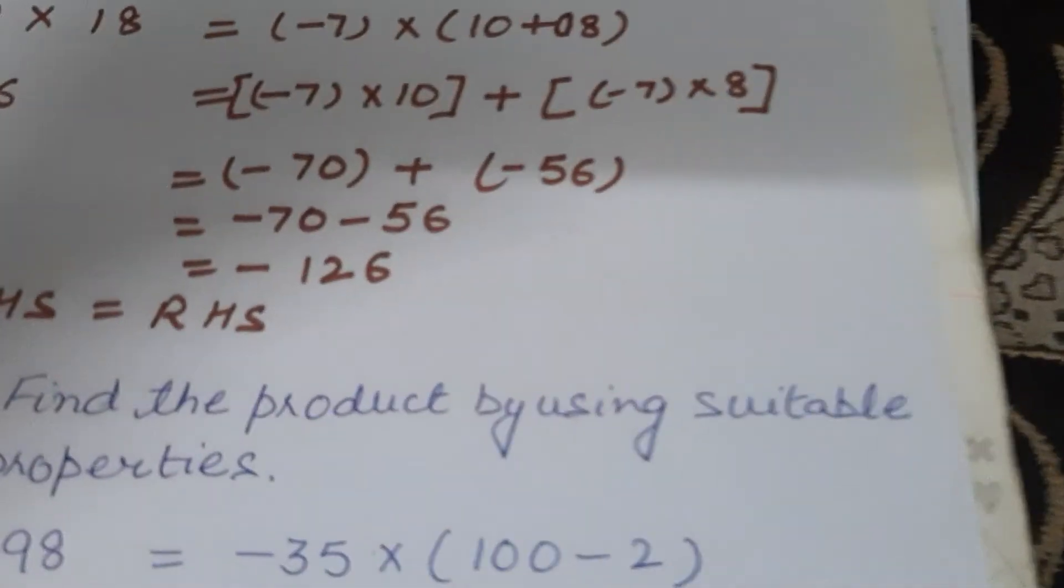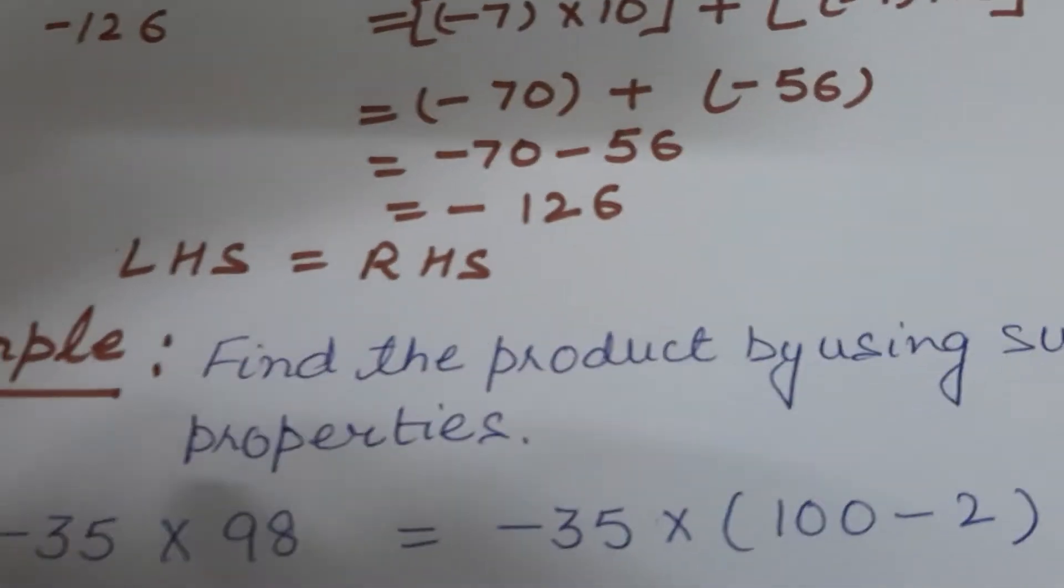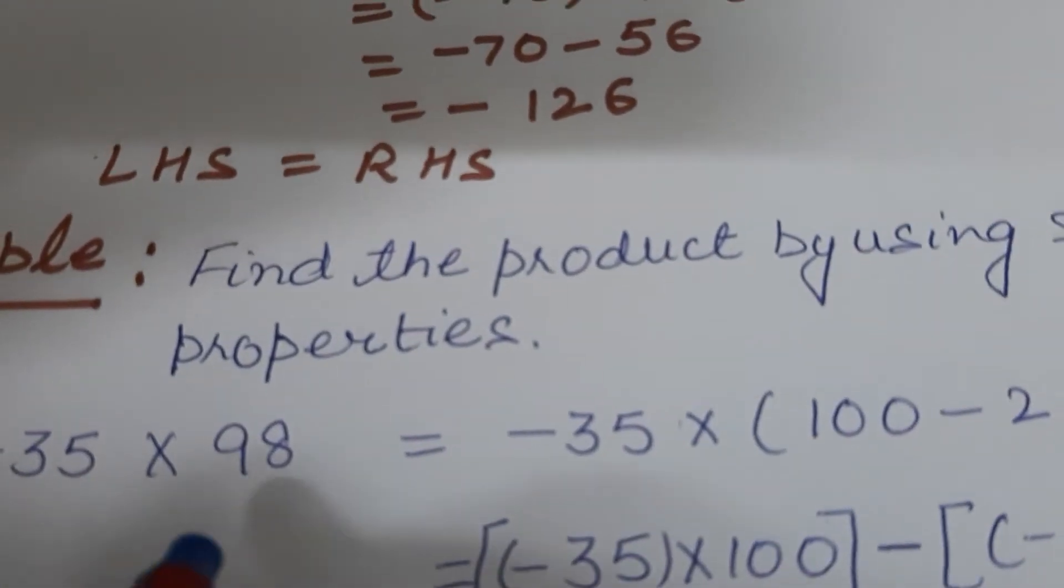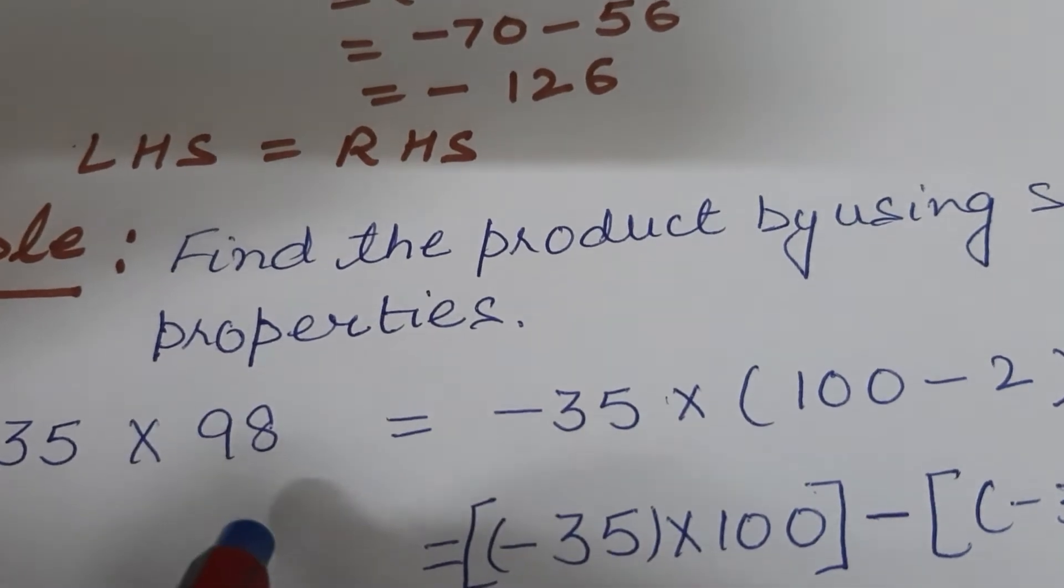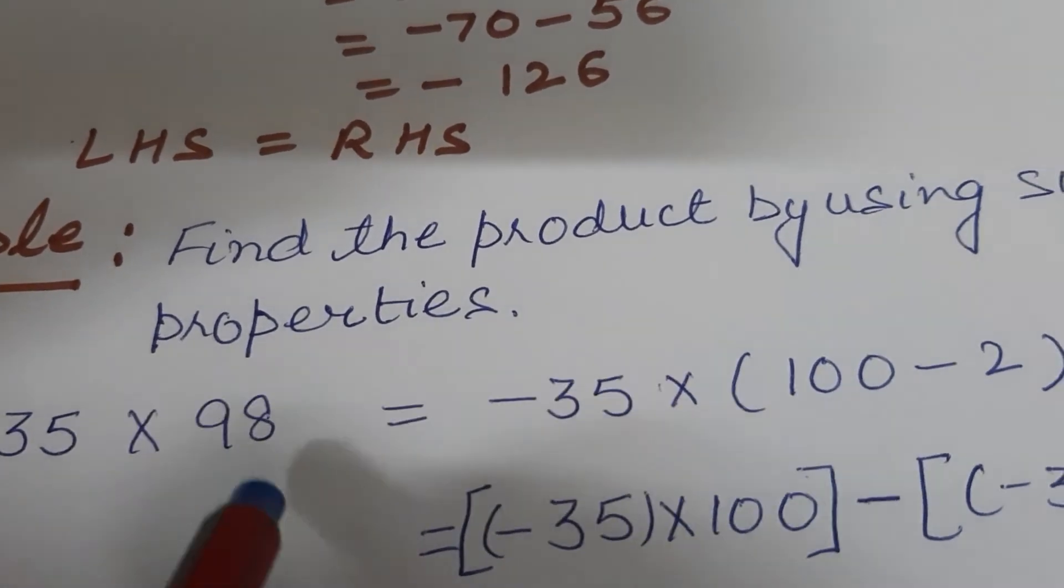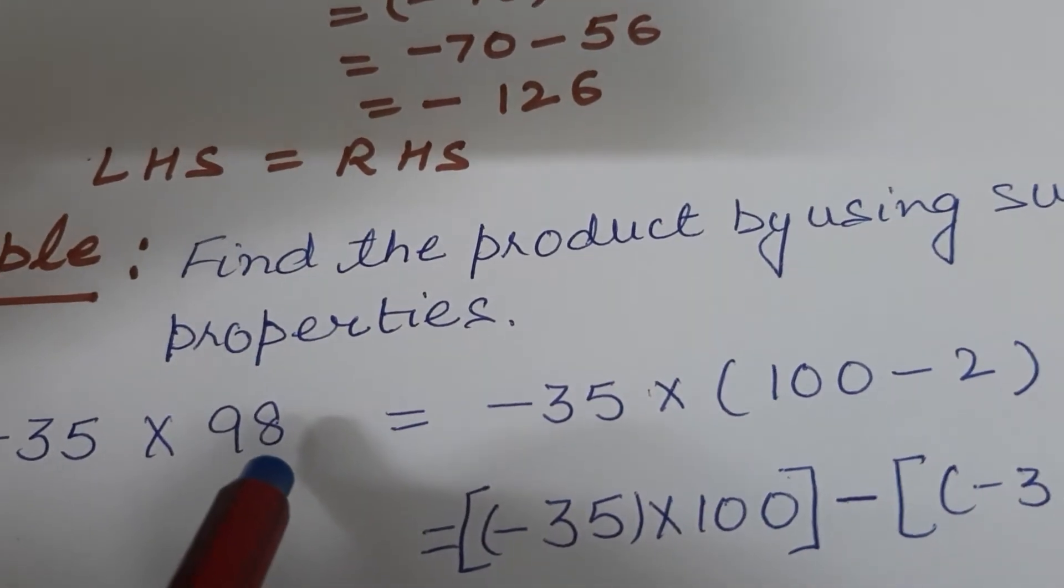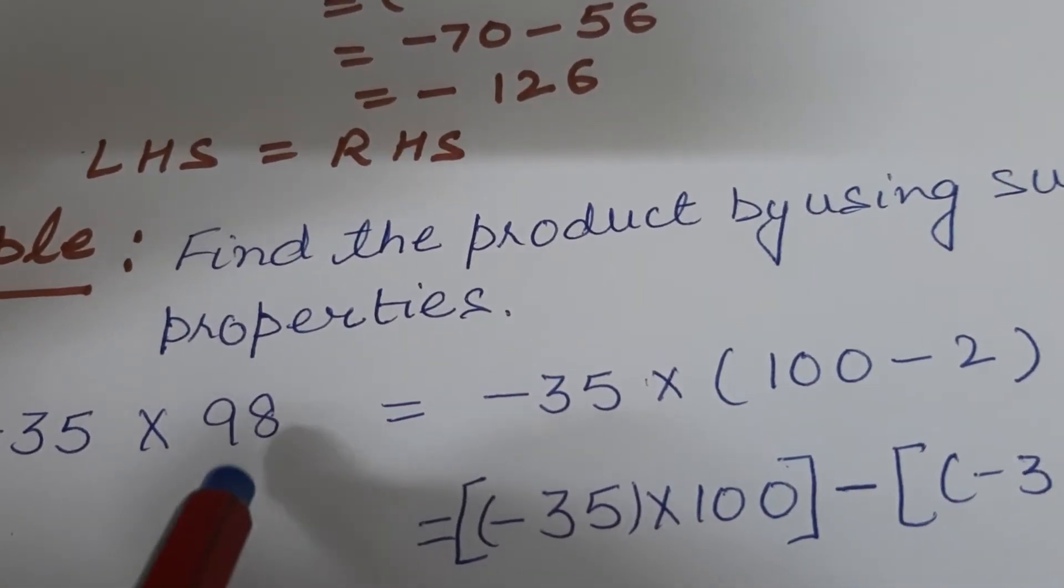So based on this, I am taking one example: minus 35 into 98. See, this calculation is quite big. You have to write it in columns then you will multiply. But without doing that, we can solve this sum by using the distributive property.